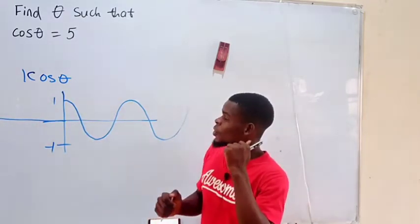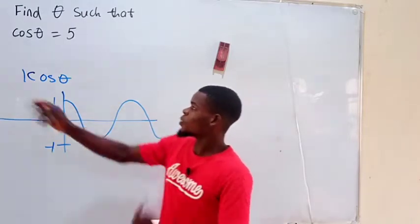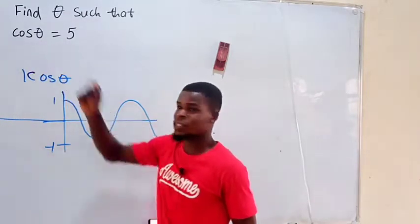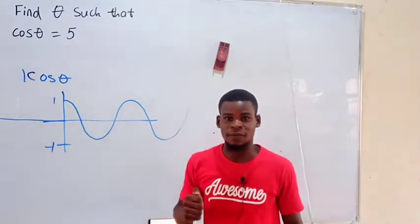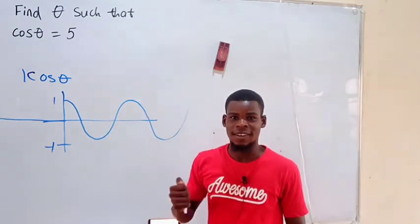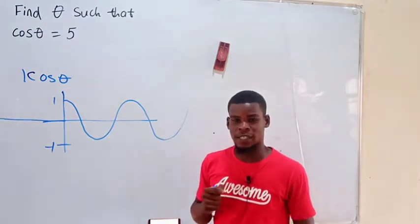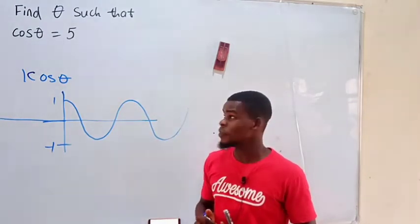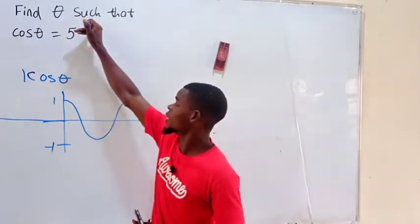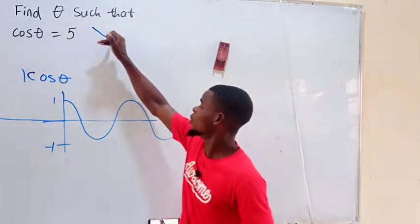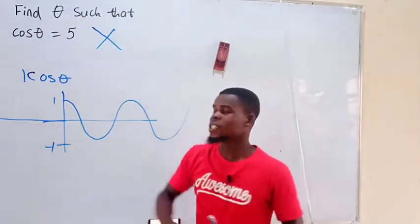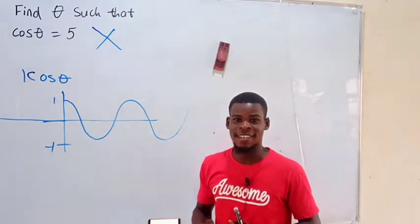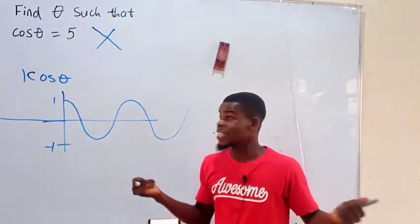So how is it possible to get cosine of an angle to give us 5? Considering the set of real numbers, for all the angles we can plug in as inputs, this is actually impossible. So does that mean our equation has no solution? It has no solution.